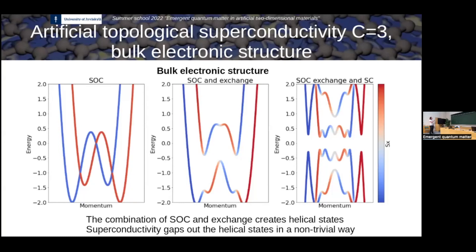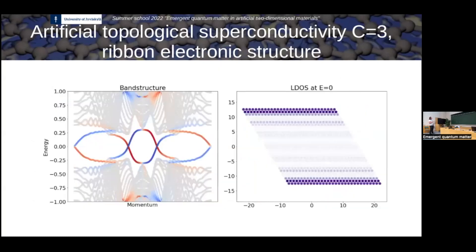The schematic is essentially the same as before. You can see that you have Chern number three because when you take a strip, you have three edge states per edge. Here red is the top edge, blue is the bottom edge. If you count the states, you have one, two, and three for the top edge, and one, two, three for the bottom edge. So the Chern number — a quantity we can define from the many-body wave function in the Brillouin zone — essentially tells you how many topological edge states you have, and in particular how many Majorana channels you have when you have a finite system.